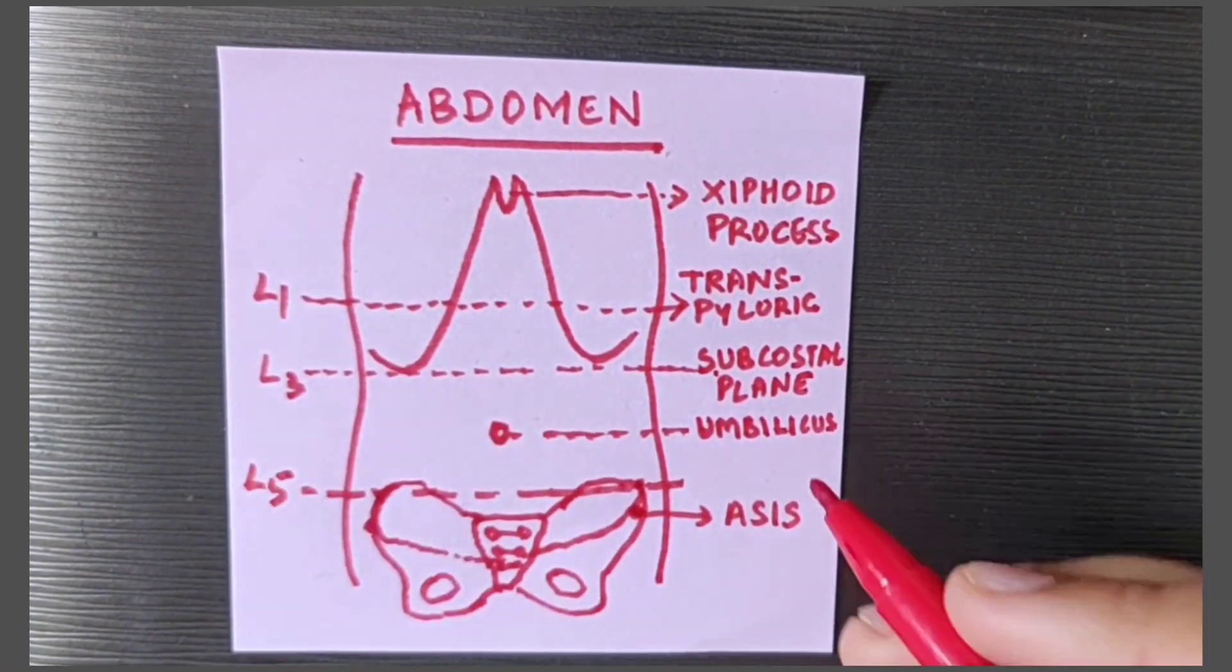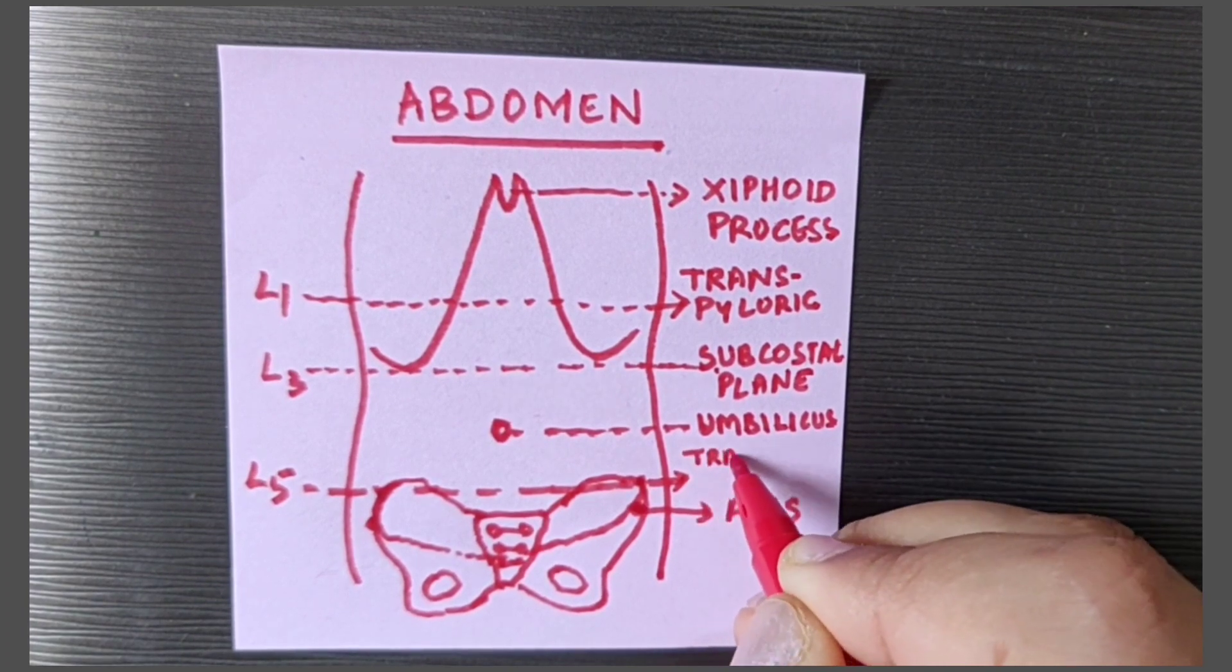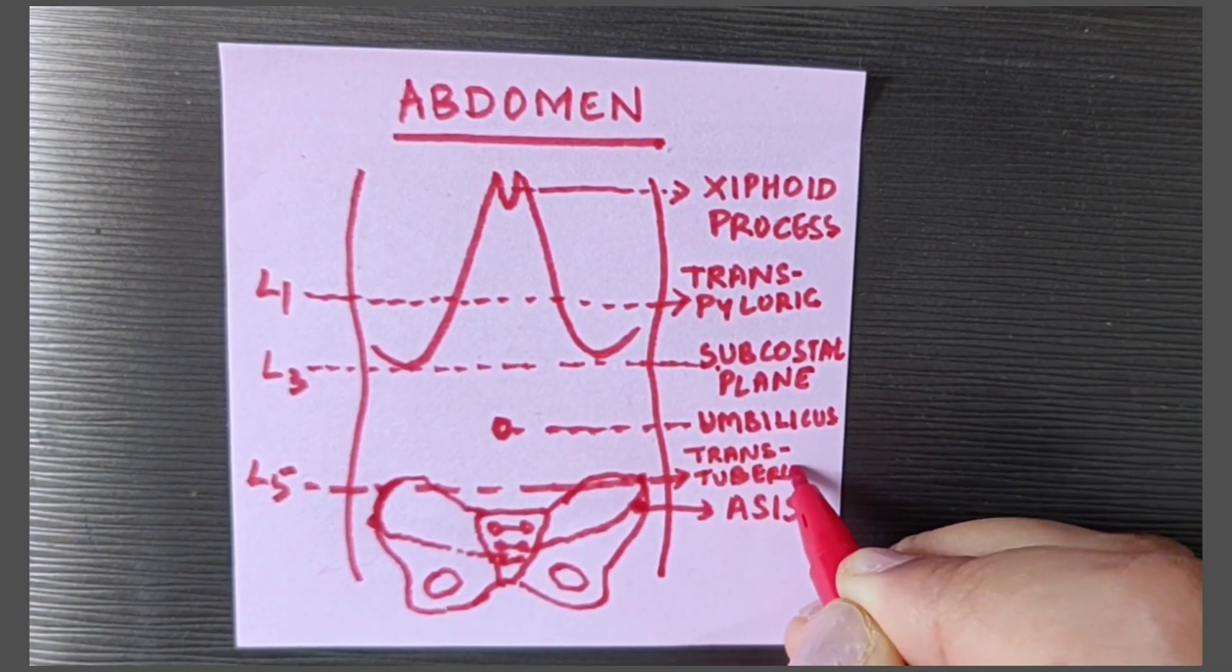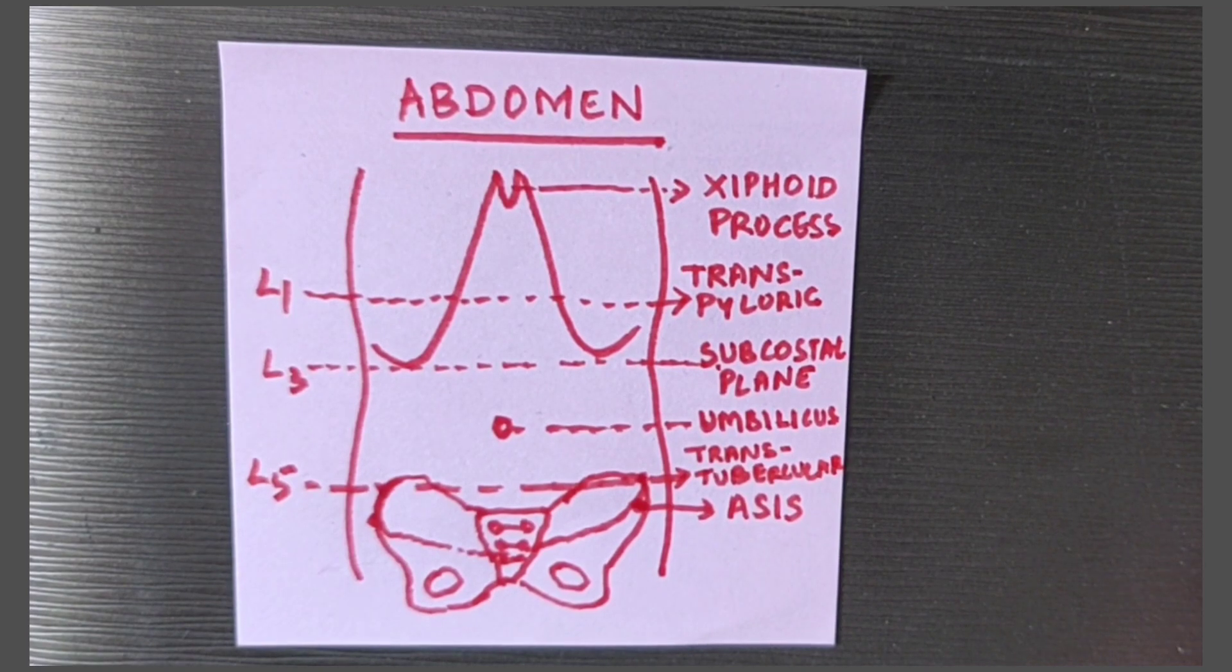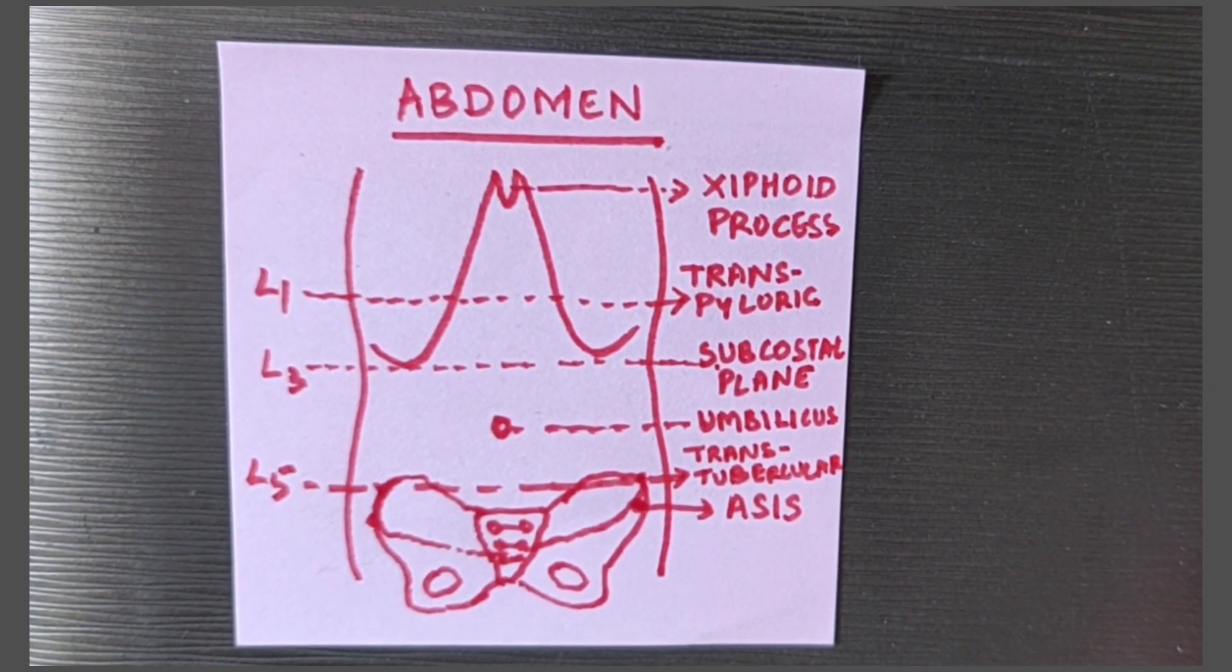There is a plane passing through them which is called as the trans tubercular plane at the level of fifth lumbar vertebra. These are the horizontal planes.